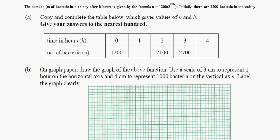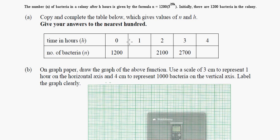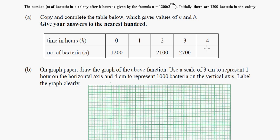So let's look at this one. It says, the number N of bacteria in a colony after H hours is given by the formula N equals 1200 times 3 raised to the 0.25H, which H is hours. Initially, there are 1200 bacteria in the colony. Copy and complete the table below, which gives values of N and H.